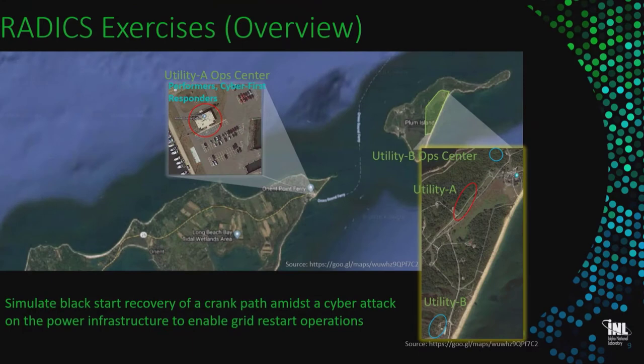Taking this back to RADIX — Rapid Attack Detection, Isolation, and Characterization Systems — the real environment for exercises includes a bit of Long Island and a lot of Plum Island, a very isolated place off the coast. Teams actually take a ferry to get onto the island to do their work. We have two utilities — Utility A and Utility B — each with staff, critical loads, and critical services they are responsible for maintaining. The power situation at each utility is different, making this very realistic for both performers and utilities.